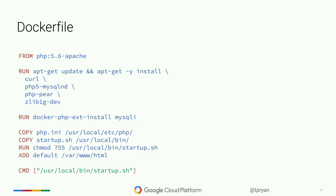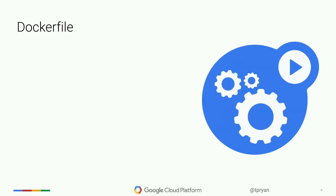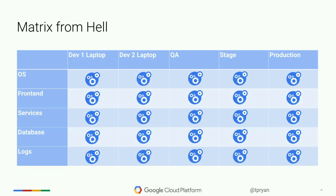So you have a Dockerfile where you create your system. You say 'I want to start with a base image,' in this case PHP Apache. Then you run some updates on it, and you've got a packaged image that you can very easily share across all your environments. That makes the matrix from hell maybe a matrix from purgatory instead.